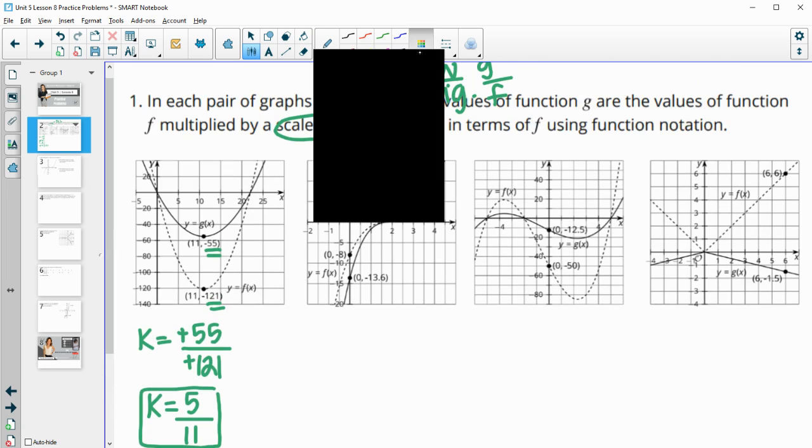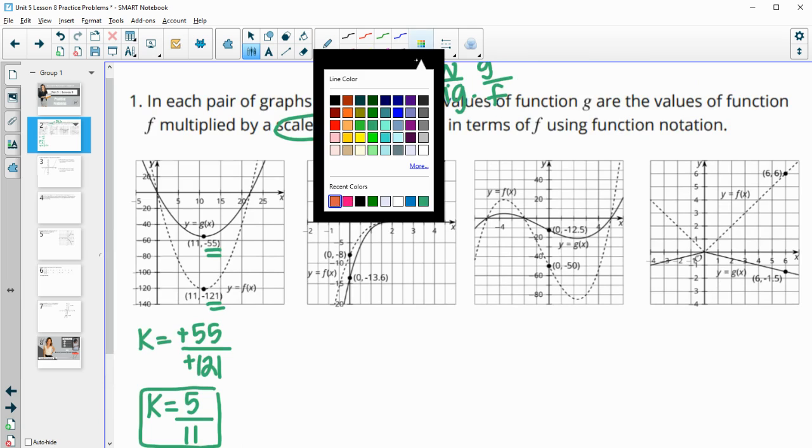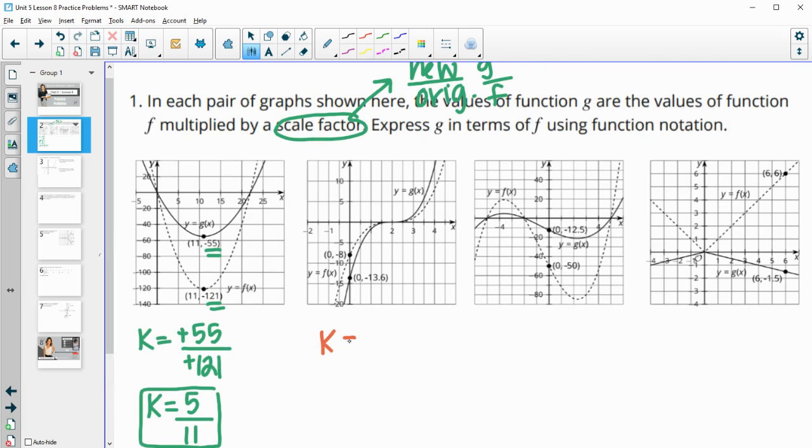We're going to keep continuing this. For this next one we'll do the new function g, in this case g is negative 13.6, over the original f function which is 8. You can divide these in your calculator and this one will give you positive 1.7. So g of x is equal to 1.7 times f of x.